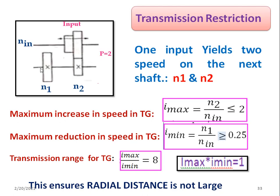The transmission range for a transmission gearbox is I_max divided by I_min, which equals 8. For example, I_max is 2 and I_min is 1/4, giving a ratio of 8. This is the maximum transmission range, which can also be expressed as φ⁸, where φ is the ratio of two successive spindle speeds.